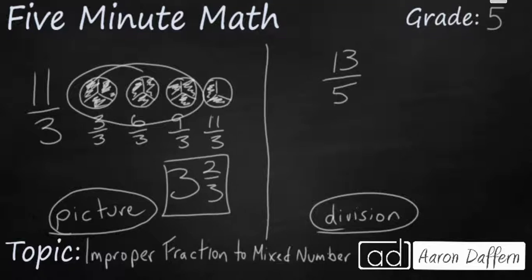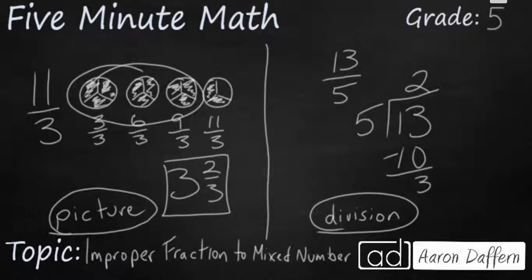With the 13 fifths, remember we're going to divide up. So 5 goes into our numerator of 13. 5 goes into 13 twice. That's our whole number. 5 times 2 is 10. So that leaves a remainder or left over of 3. So it's going to be 2 and 3 fifths.